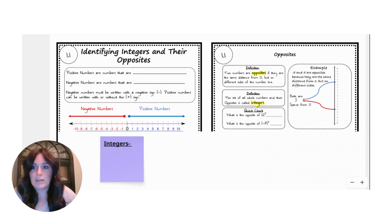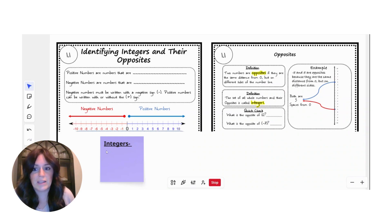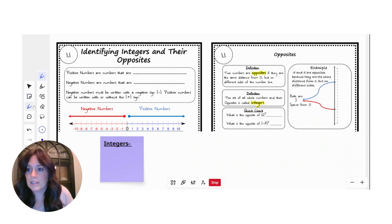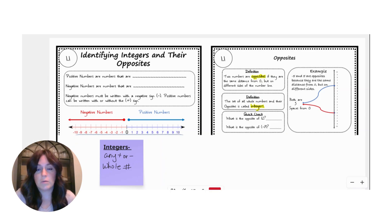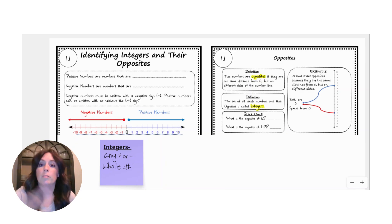Think back to our notes about integers and their opposites. I want to start with the definition of what an integer is. An integer is any positive or negative whole number. It's any number that doesn't have any fractions or decimals attached to them — no pieces, just the whole — but they can be both positive and negative. So we are talking about situations that go below zero now.